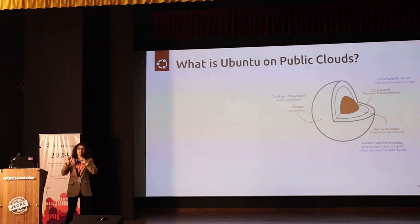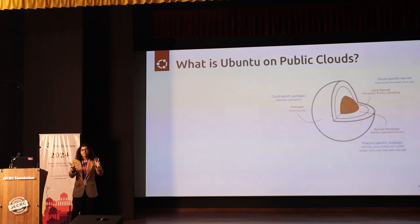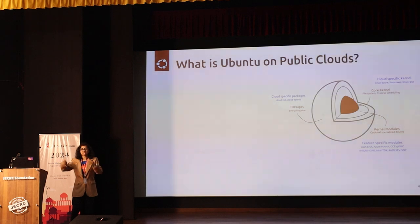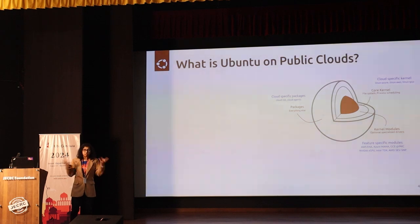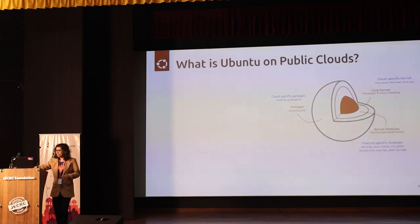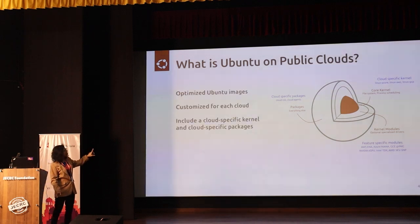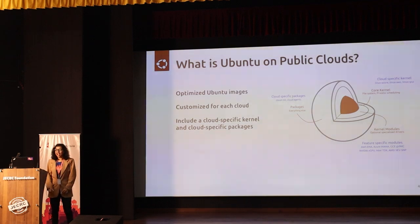The packages are also cloud-specific. You need something called cloud-init — think of it as a script which runs at startup and shutdown, configuring things specific to that particular cloud or its users. Any configuration done right when the machine comes up is handled by cloud-init. So everything in effect is cloud-specific. What you have is optimized Ubuntu images, customized for each cloud, including cloud-specific kernels and cloud-specific packages.